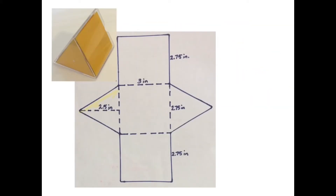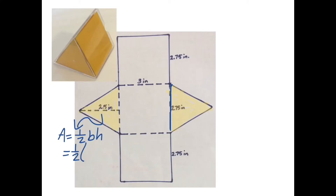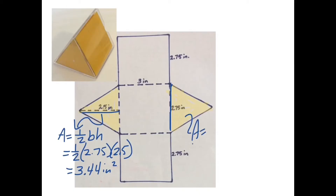The first thing you want to do is identify your bases, because you need to know which faces are bases and which are lateral sides. Here the bases are triangles. To find the area of each triangle, we use A equals one-half base times height: one-half of 2.75 times 2.5, which gives us approximately 3.44 square inches. So this triangle also has an area of about 3.44 square inches.